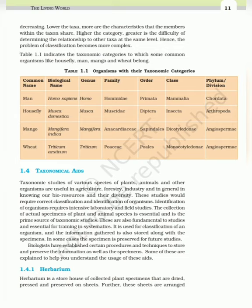Taxonomic studies of various species of plants, animals and other organisms are useful in agriculture, forestry, industry and in general for knowing our bioresources and their diversity. These studies require correct classification and identification of organisms. Identification of organisms requires intensive laboratory and field studies. The collection of actual specimens of plant and animal species is essential and is the prime source of taxonomic studies, and information gathered is stored along with the specimens. Biologists have established certain procedures and techniques to store and preserve the information as well as the specimens.